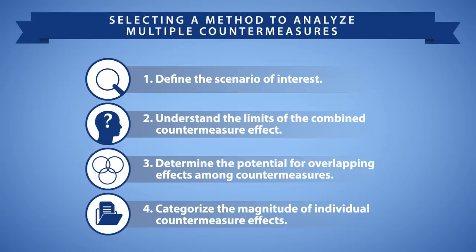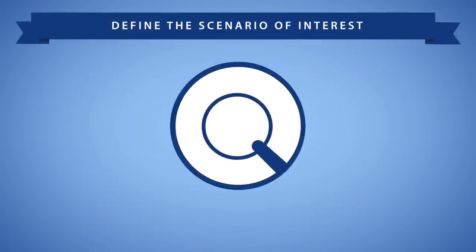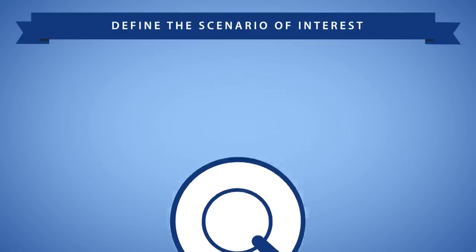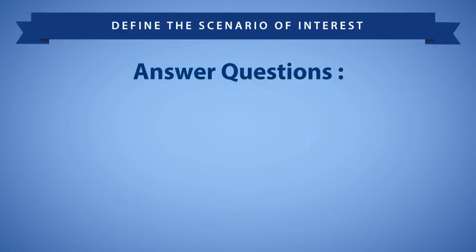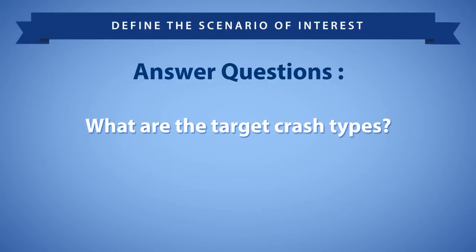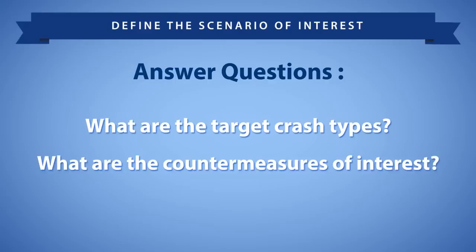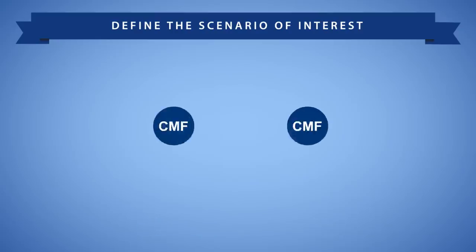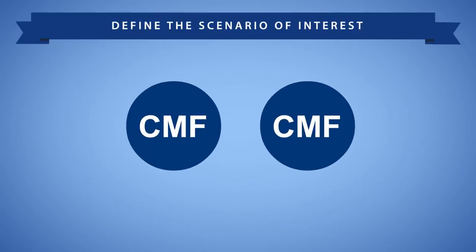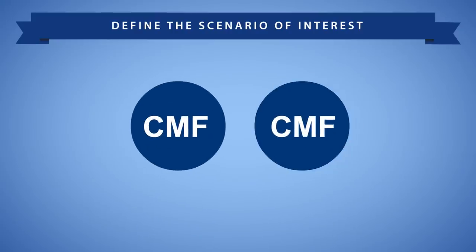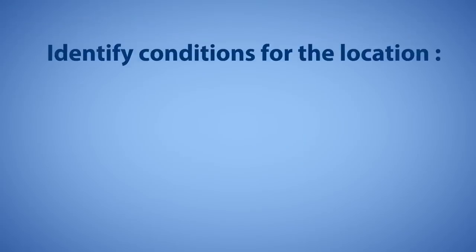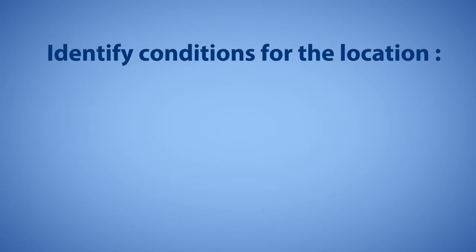The first step towards selecting an appropriate method is to define the scenario of interest. Specifically, you need to answer questions such as: what are the target crash types, and what are the countermeasures of interest? Defining the scenario of interest will help you select appropriate CMFs and determine the potential for overlapping effects later. First, identify the general conditions for the location of interest.